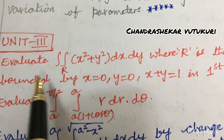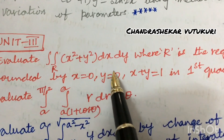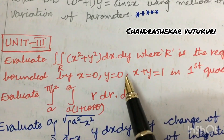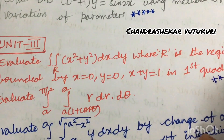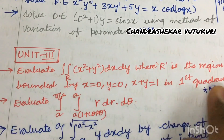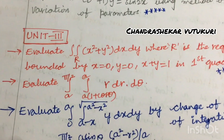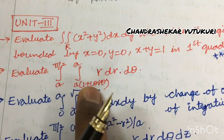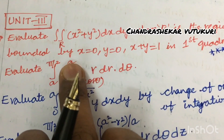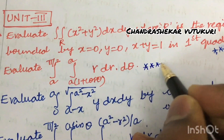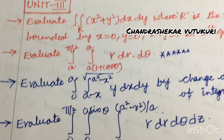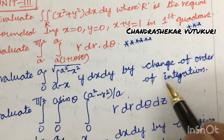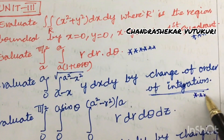Evaluate the double integral ∬_R (x² + y²) dx dy, where R is the region bounded by x = 0, y = 0, x + y = 1 in the first quadrant. Also evaluate the double integral ∫₀^(π/2) ∫_a^(a(1+cosθ)) r dr dθ — this is a very important awaited question. Evaluate double integration by change of order of integration — also a very important gunshot question.